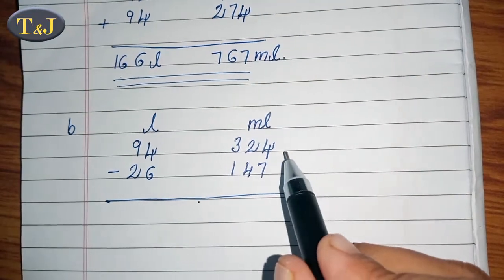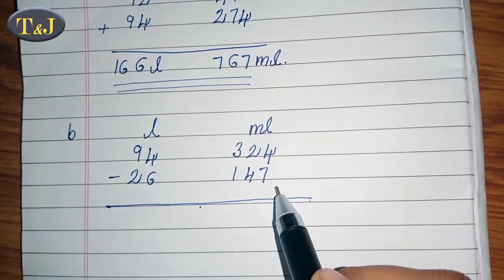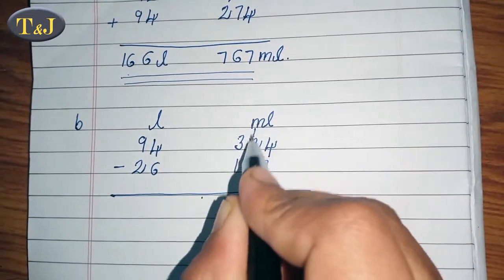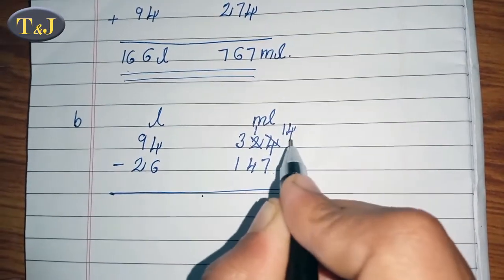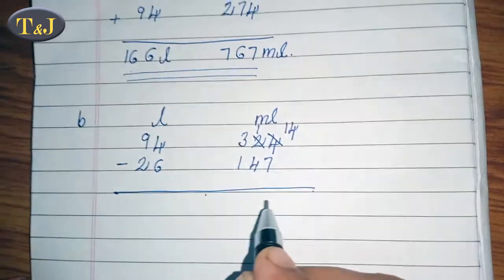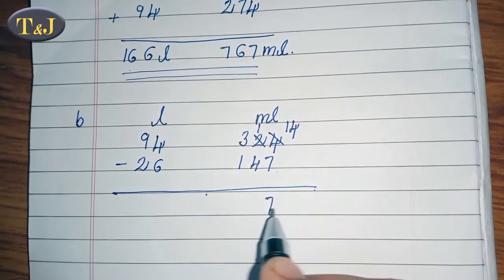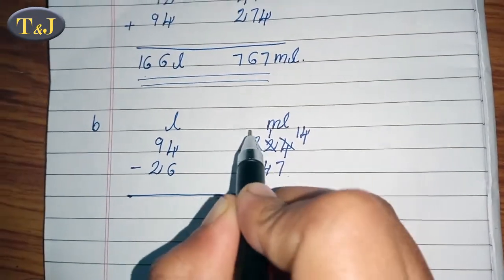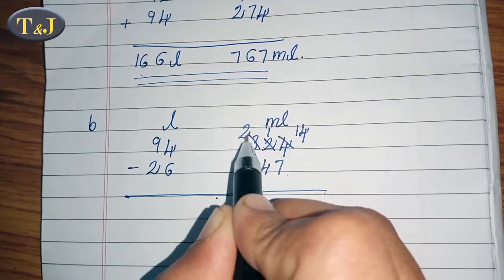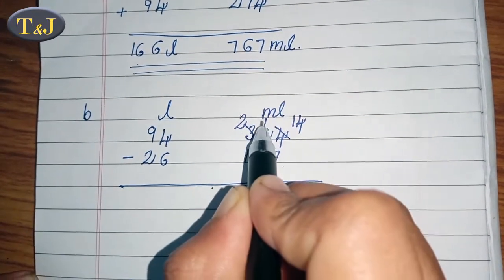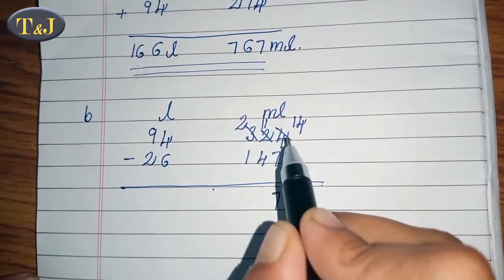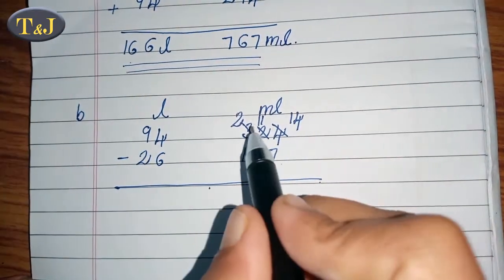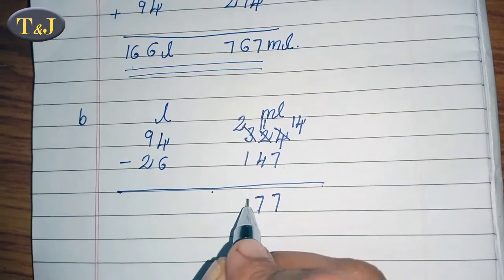First we take the values 4 and 7. Since 4 minus 7 is not possible, we borrow 1. So this number becomes 1 and 14. Then 14 minus 7 is 7. Next, 1 minus 4 is not possible, so we borrow 1 again, cutting the number and subtracting 1, giving us 2. This number becomes 11, so 11 minus 4 equals 7, and 2 minus 1 equals 1.